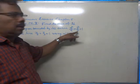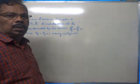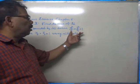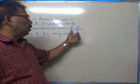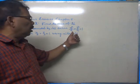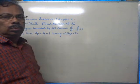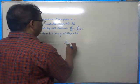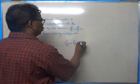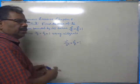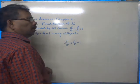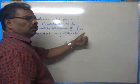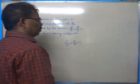Let us consider the curve x²/9 + y²/4 = 1. It is an ellipse centered at the origin with a = 3 and b = 2. For ellipses of the form x²/a² + y²/b² = 1, when the major axis is along the x-axis, the vertices are at (-3, 0) and (3, 0). The major axis is along the x-axis itself, so we can draw the figure.